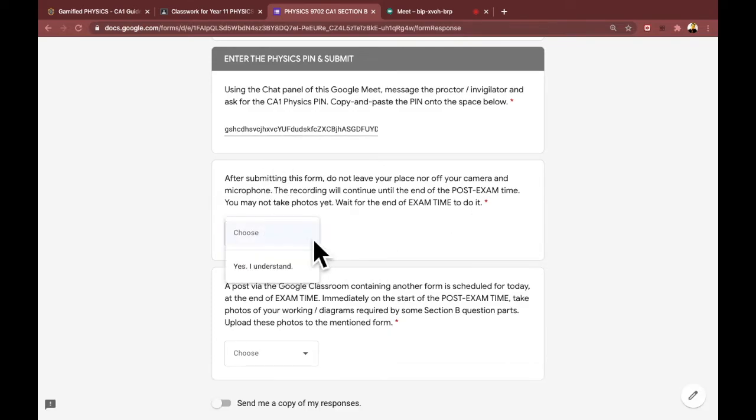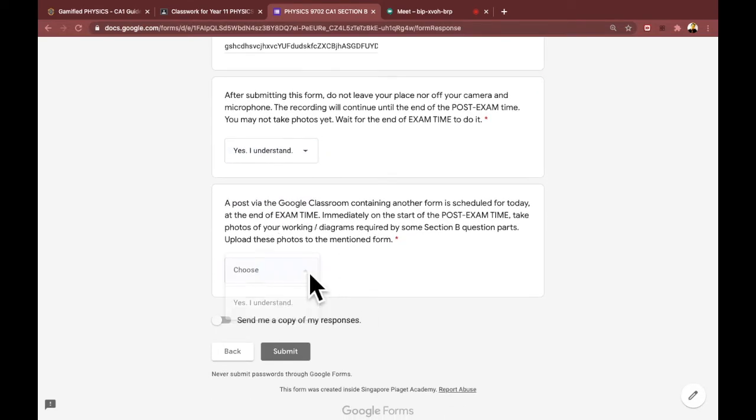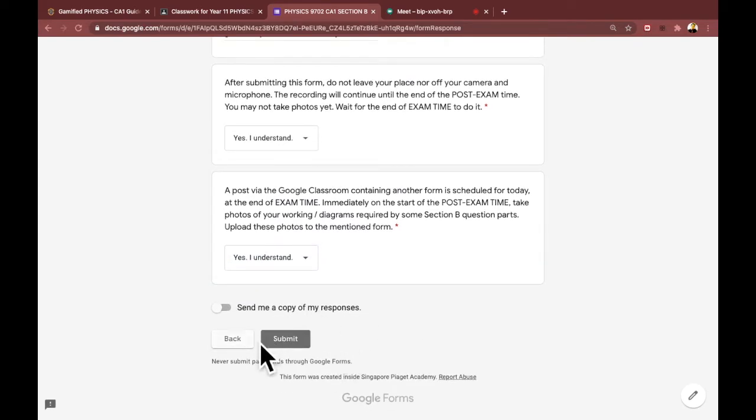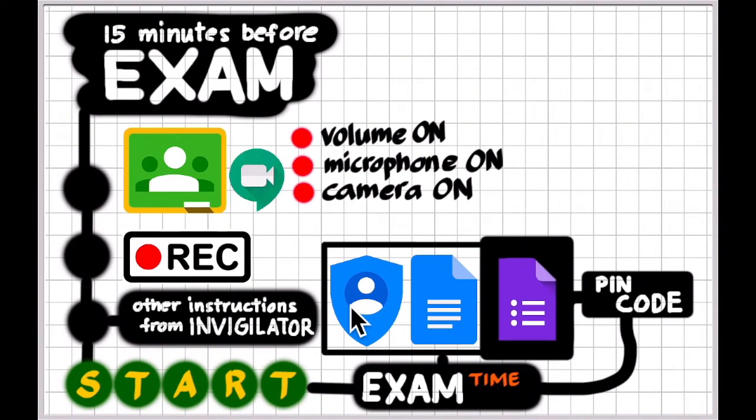When done with the code, there may be other instructions here. Read and respond, then click submit. Now, imagine that you already have submitted all the forms for CA1. At this point, and if photo uploads are not required, stay in your places till the invigilator lets you leave the meeting room at the end of the exam time.